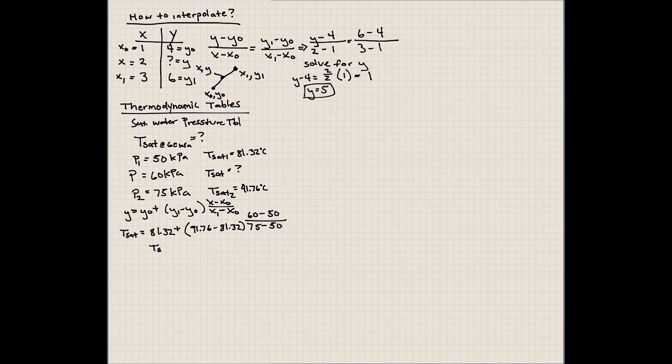So you can run this calculation, and you'll see the saturation temperature at this pressure comes out to be 85.5 degrees Celsius. A rule of thumb too is that the temperature we're calculating here had to be between the ranges of 81.32 and 91.76.